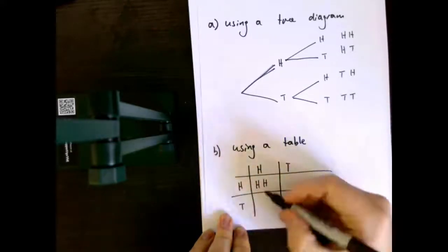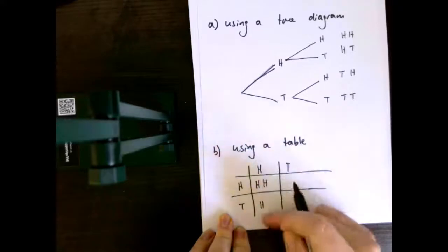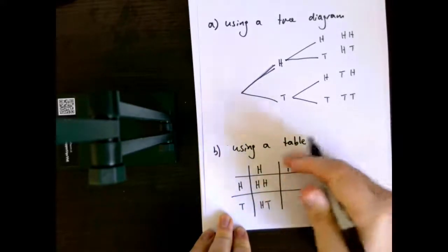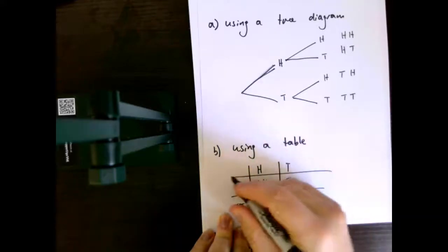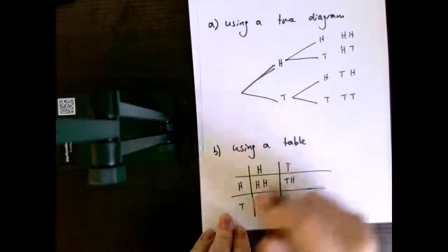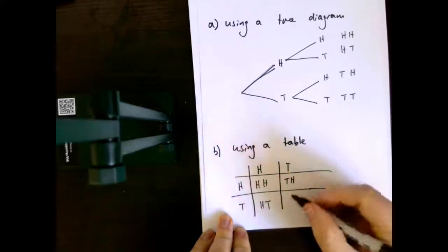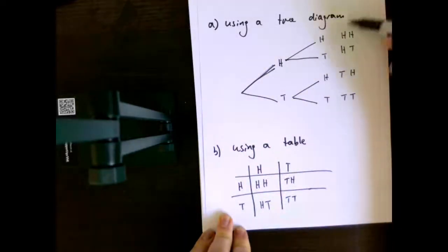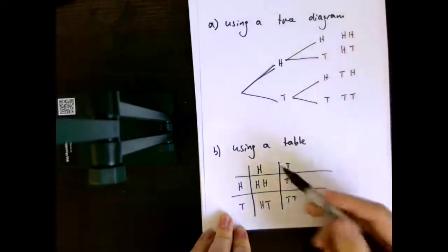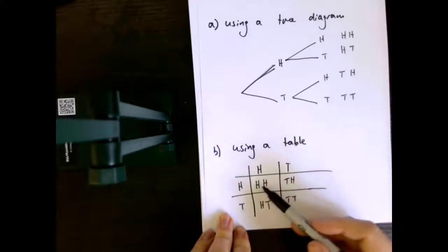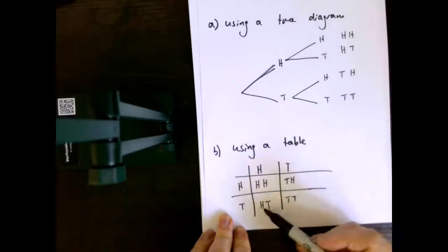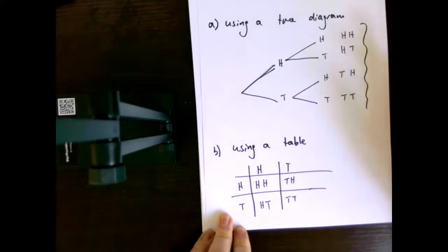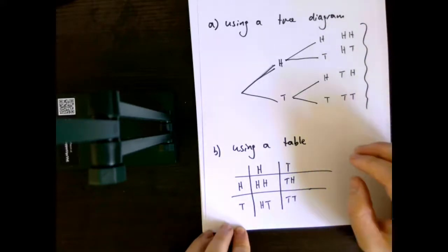On this next one, we have a head first and then a tail second. Vice versa — if we throw a tails first, we have a tails first and then a head. And then we have a tails and a tails. What you'll notice is that in the table, it's actually set up almost exactly like what we've done with the tree diagram. Heads-heads, tails-head, head-tails, tails-tails — which is exactly the sample space that we have from our original example.